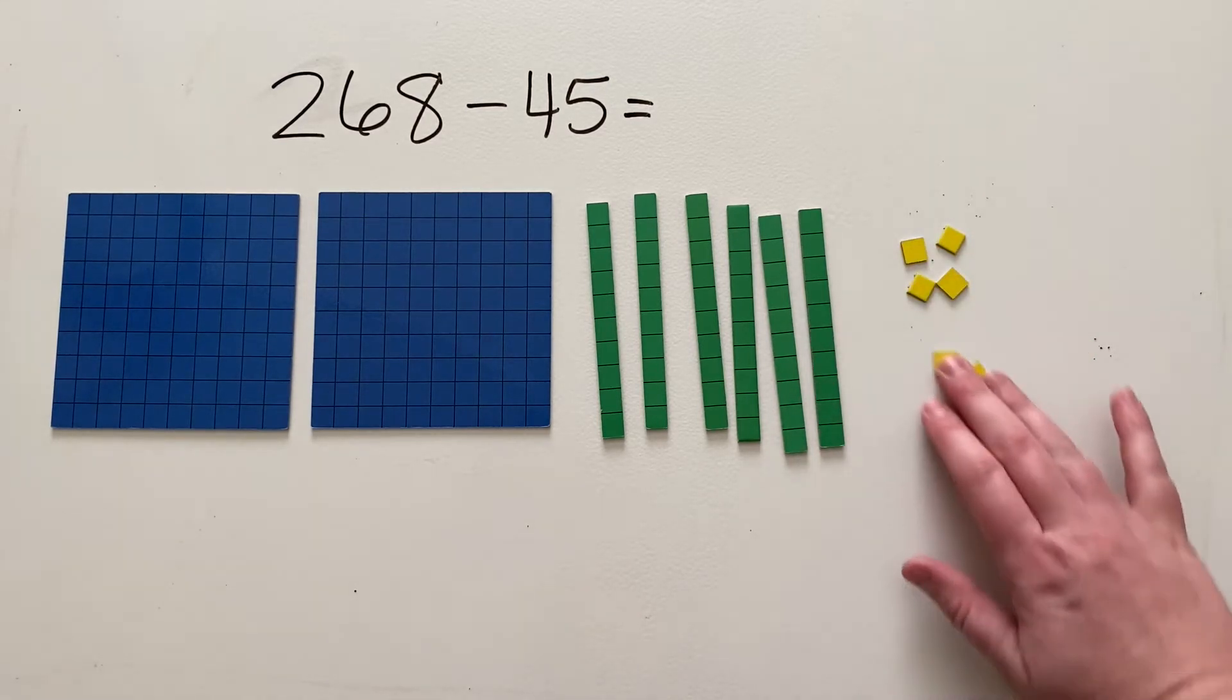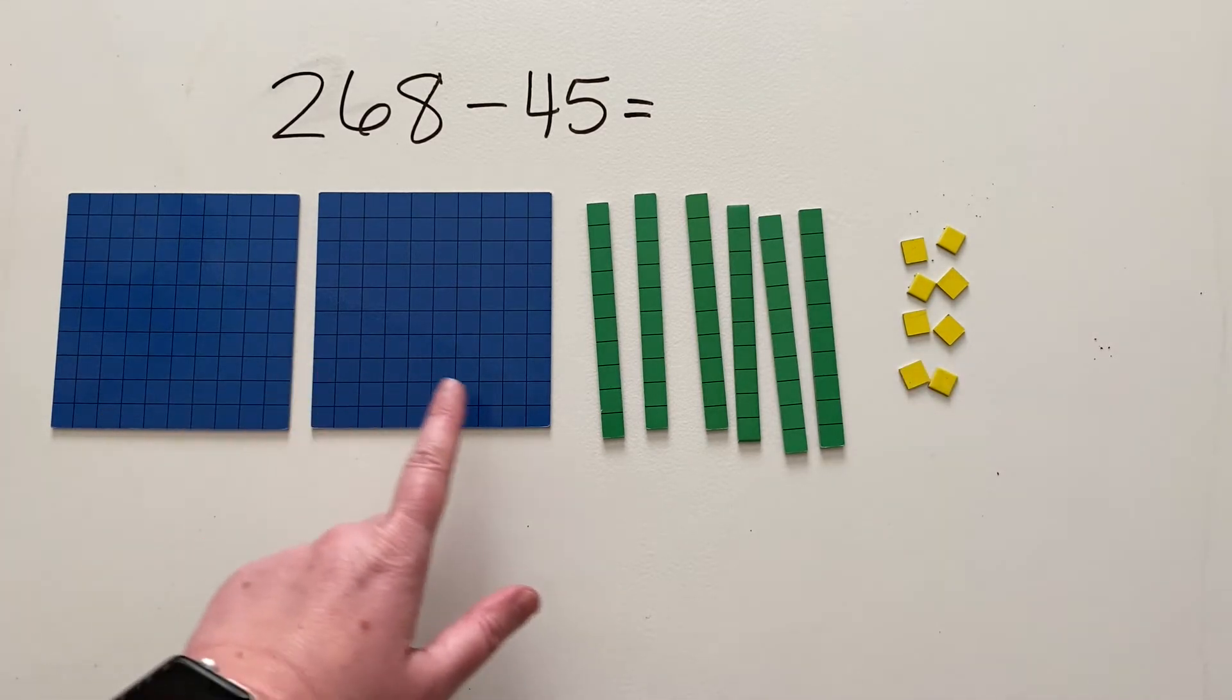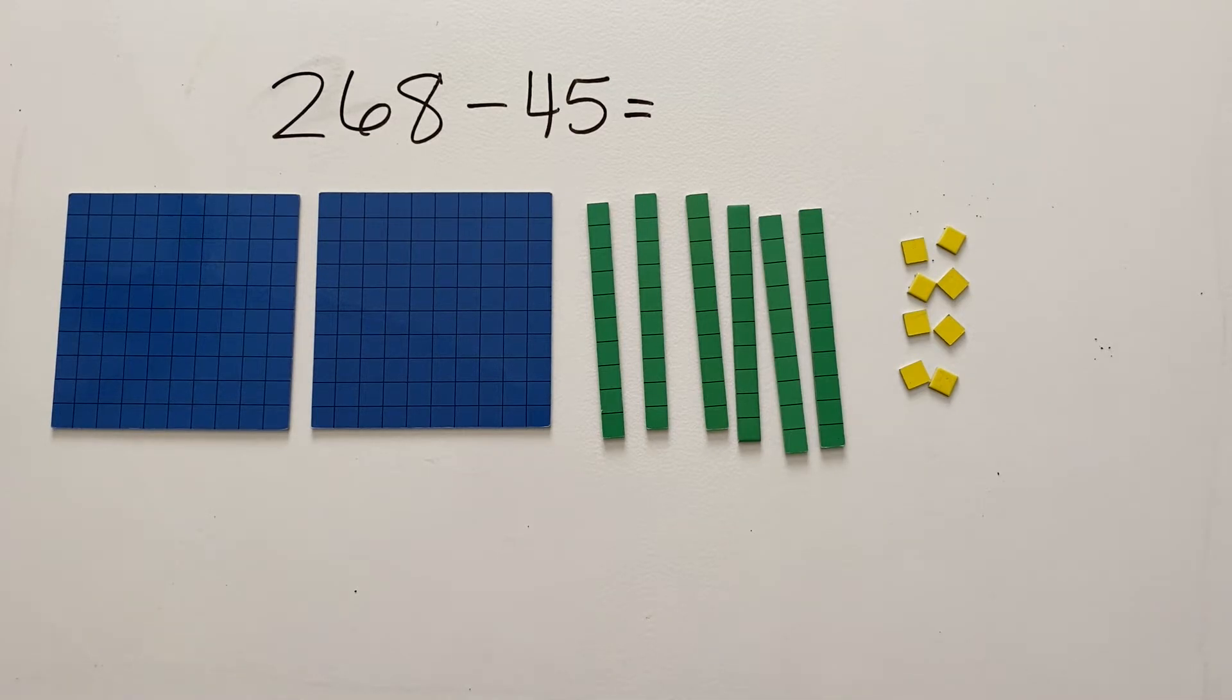And then 8 ones. So there's 2, 4, 6, 8. So 268. Now I am subtracting the number 45.